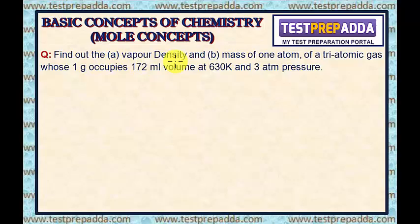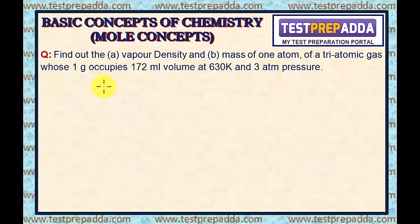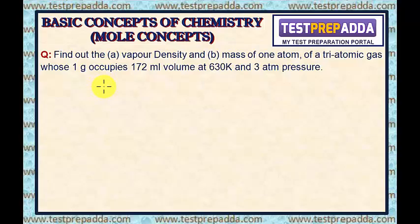Now I will take another question. Find the vapor density and mass of one atom of a triatomic gas (assume A₃), whose 1 gram occupies 172 ml volume at 630 Kelvin and 3 atmospheric pressure. I request you all to attempt this question on your own and share your answer and solution.